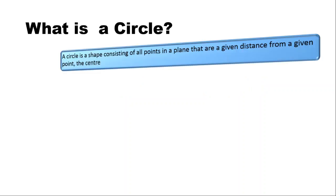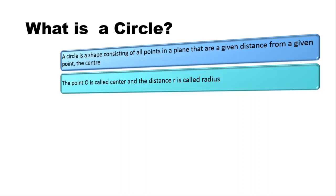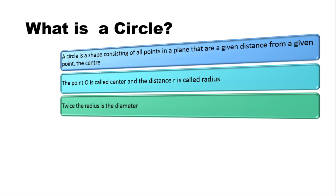So what is a circle? A circle is a shape consisting of all the points in a plane that are a given distance from a given point. That given point is called the center. Usually the center is denoted by O, and the radius is denoted by R.